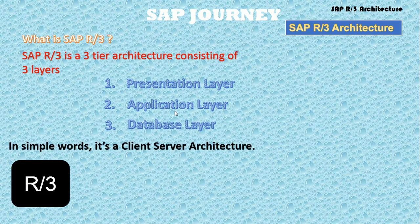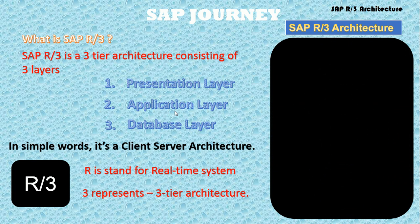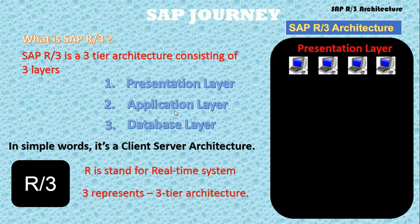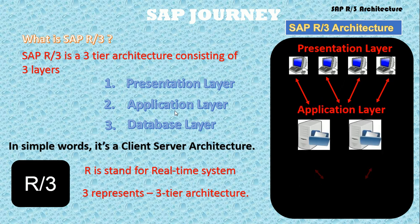In simple words, it's a client-server architecture. What is the meaning of R3? R stands for real-time system and 3 represents the three-tier architecture. So here is the architecture of SAP: first layer is presentation layer, second layer is application layer, and the third layer is database layer.